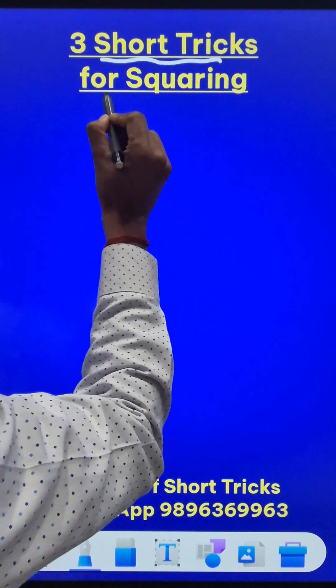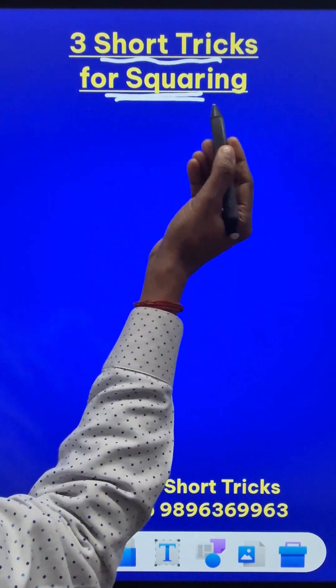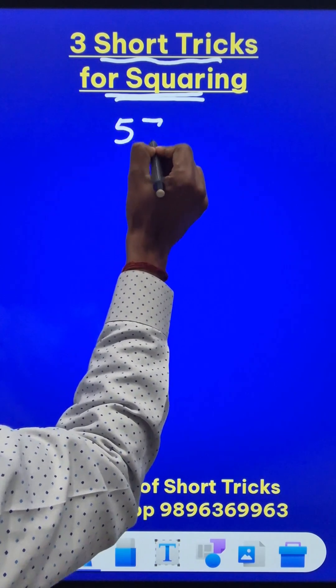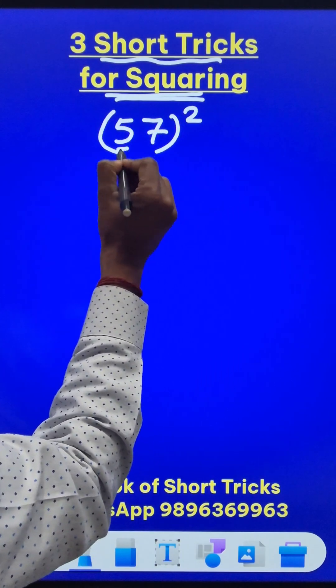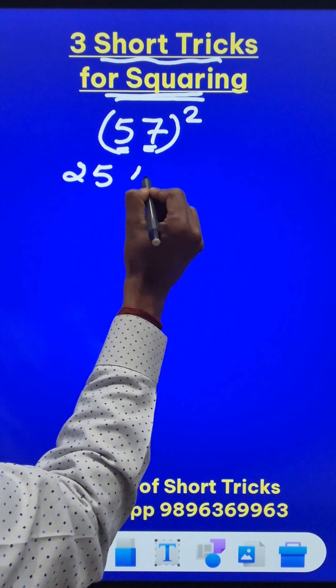Here are three amazing short tricks to find the square of some special numbers. Like suppose you have to do the square of 57. You know the square of 5 is 25 and the square of 7 is 49.